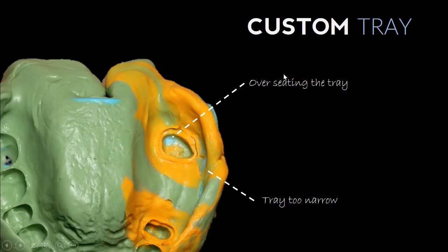One of the other advantages of making a customized tray is that you can have an even thickness of material that covers the teeth and anatomical features of the mouth.